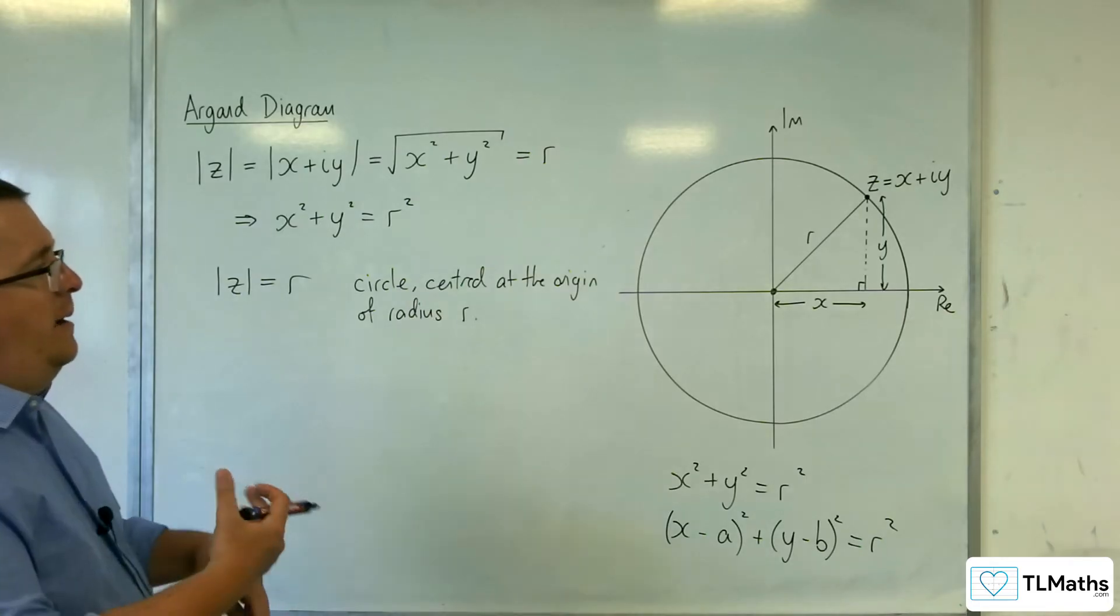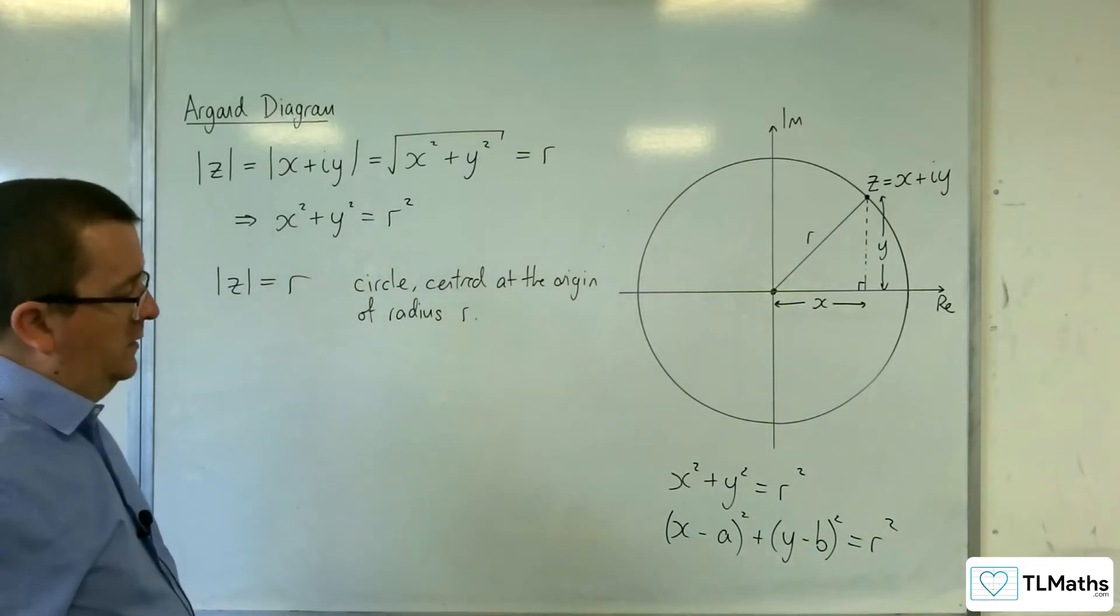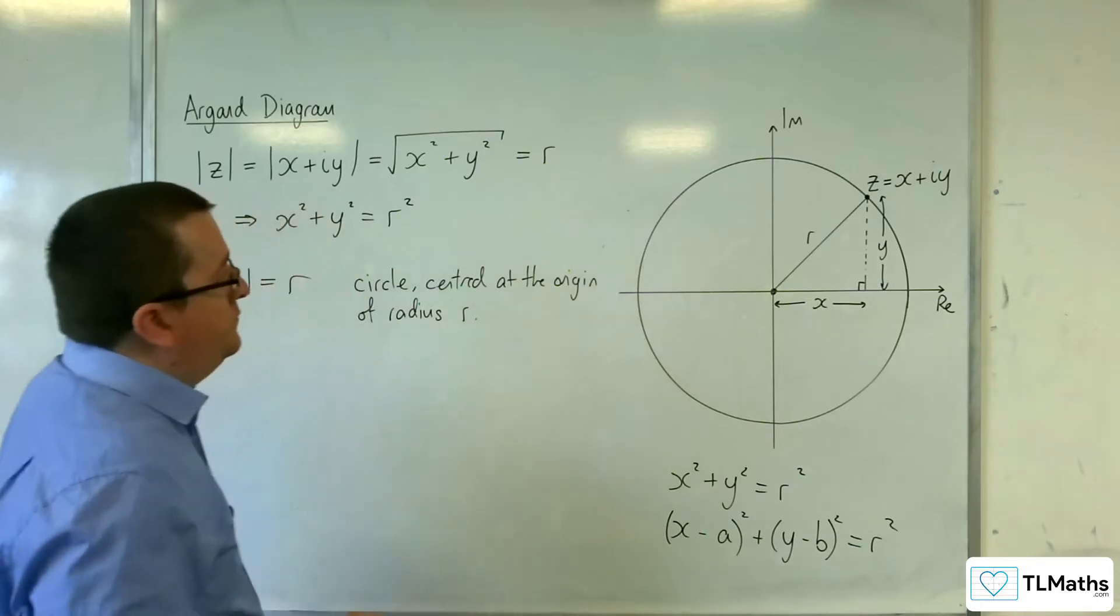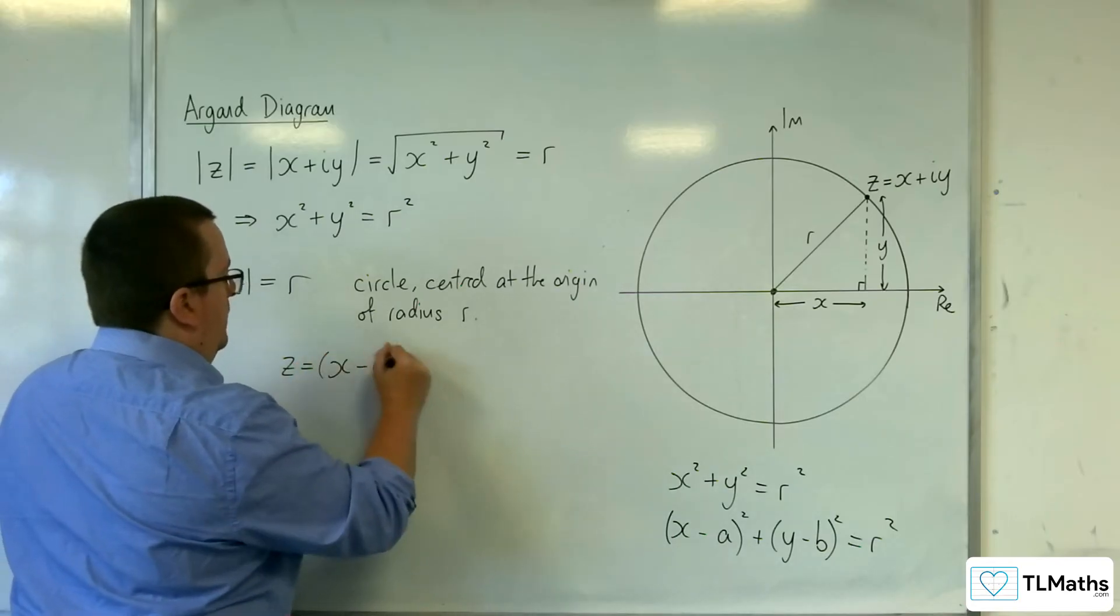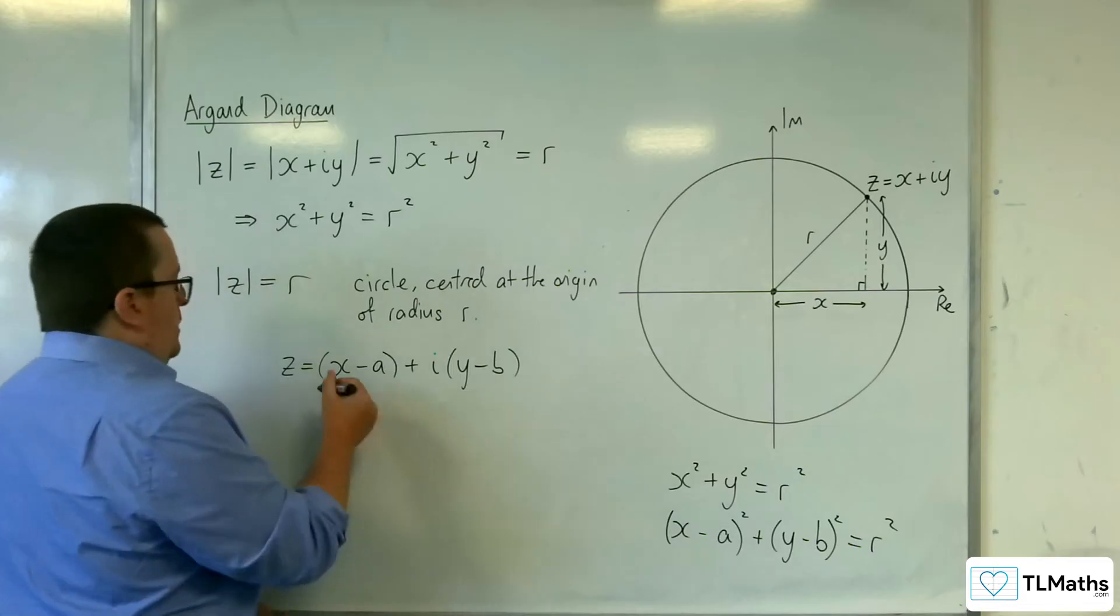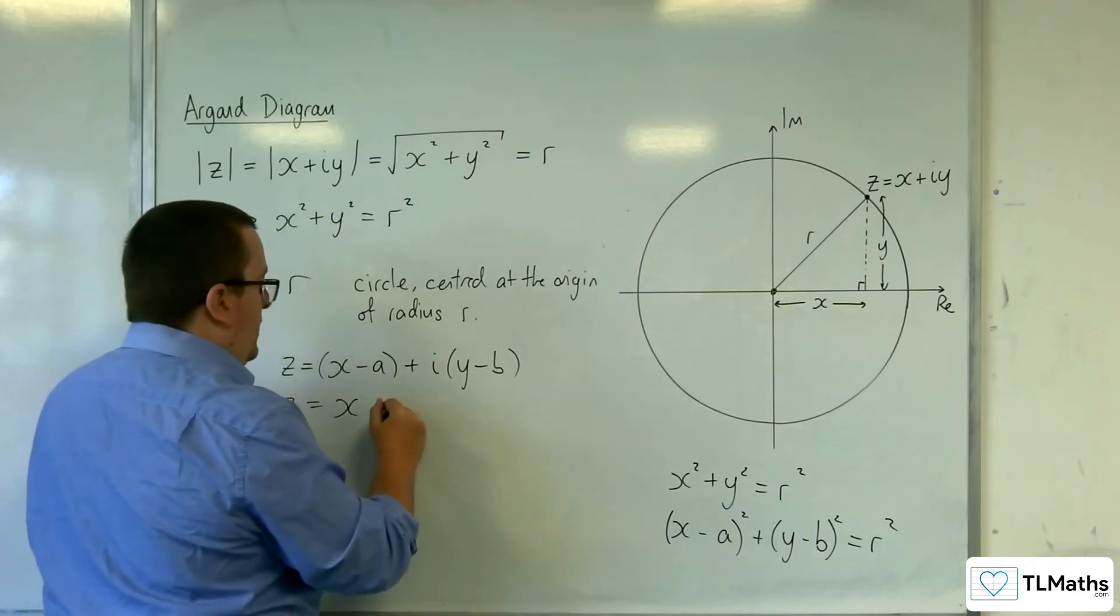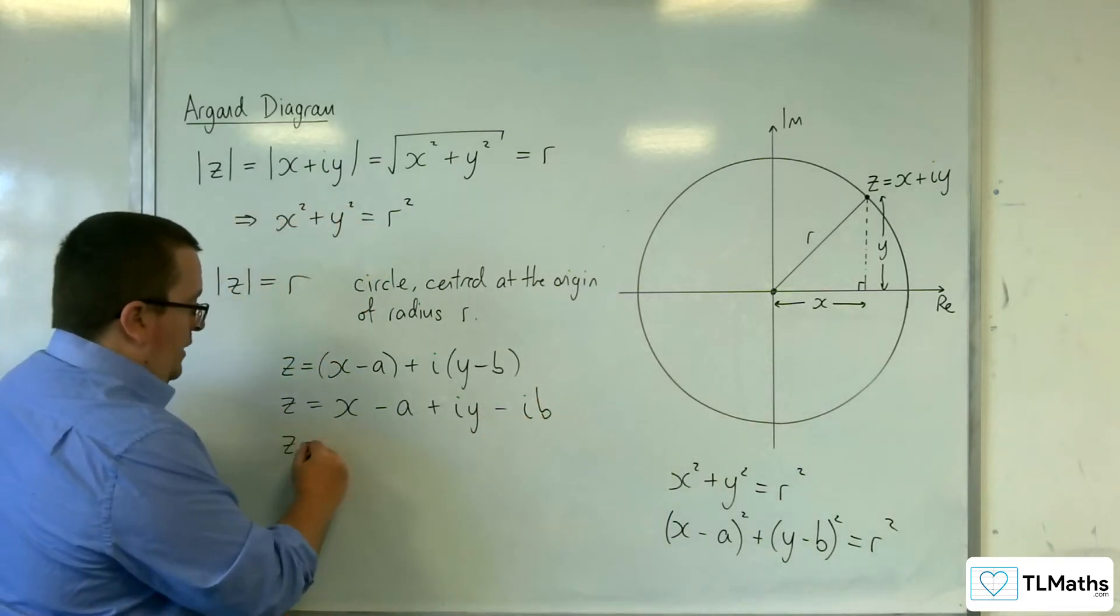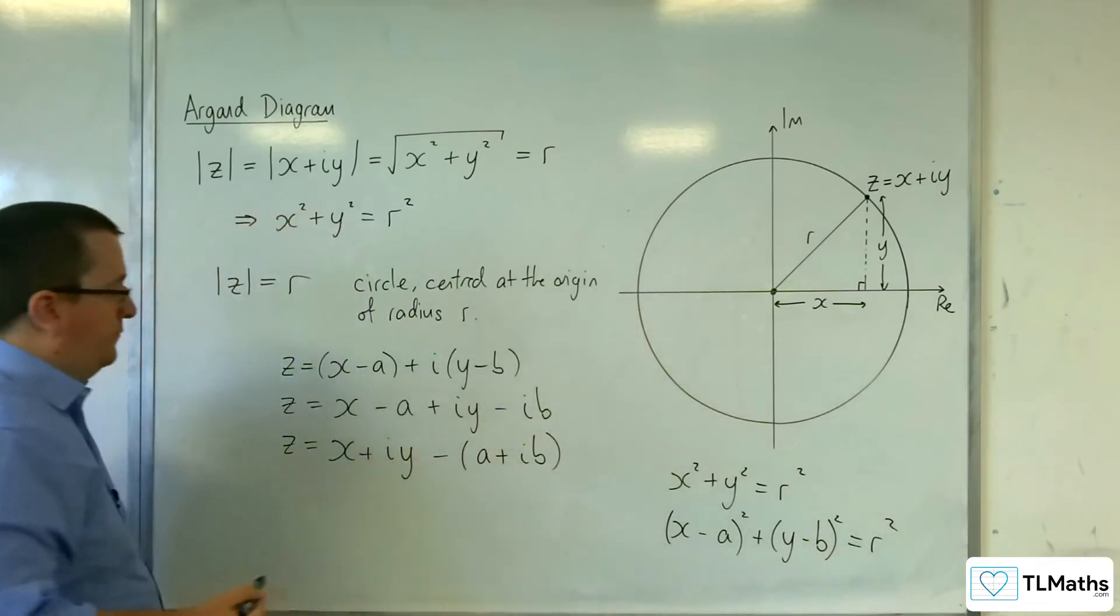So, how can we put that into complex form? Well, what you've got here is that if you've now got x take away a and y take away b for your complex number, so let's say we've got z is now (x - a) plus i(y - b). Then, you can split that up into x take away a plus iy take away ib, and then you've got your x plus iy take away a plus ib, right?